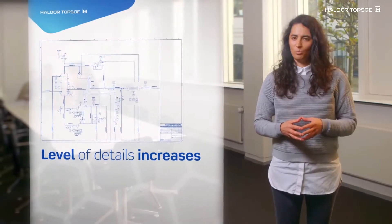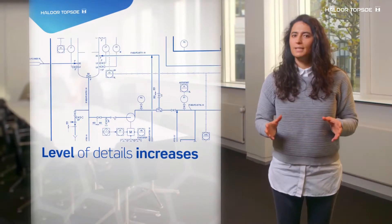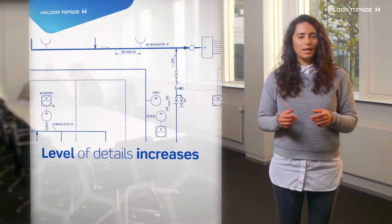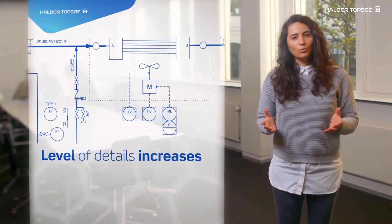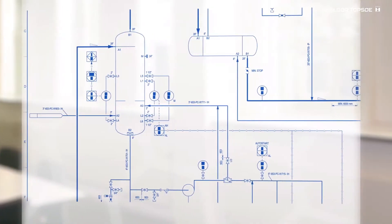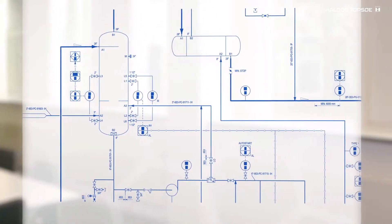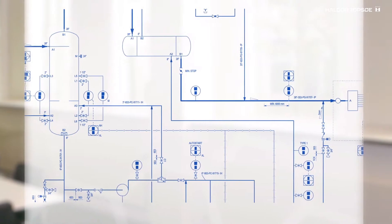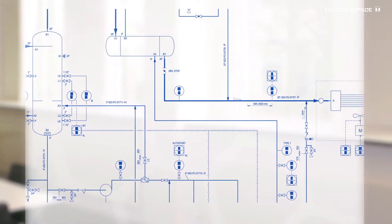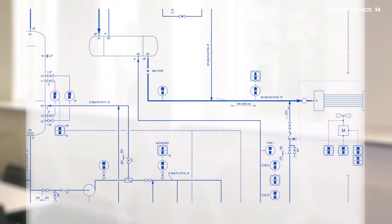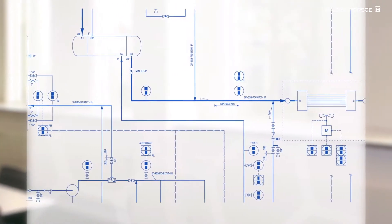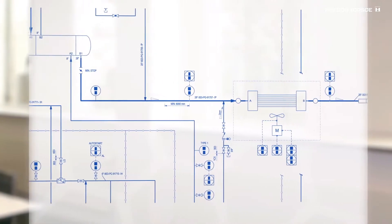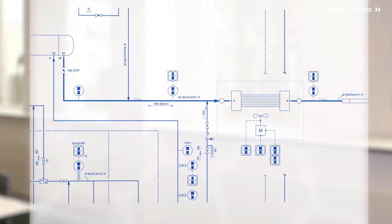As the project develops the level of detail also increases, and the next step will be to create a complex diagram showing all the pipes in the plant. In this diagram we provide information about the material and size of each pipe and show the various instrument locations.